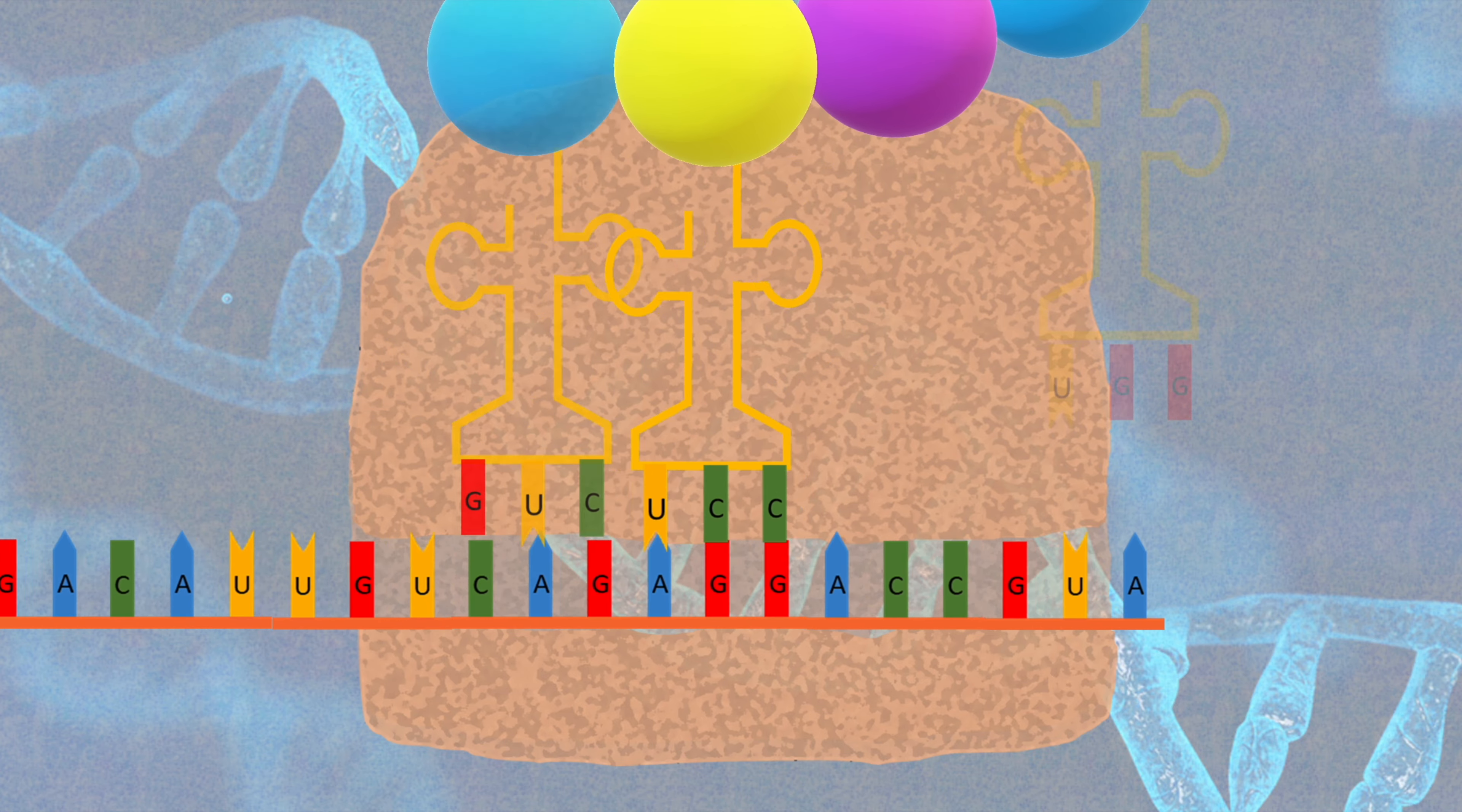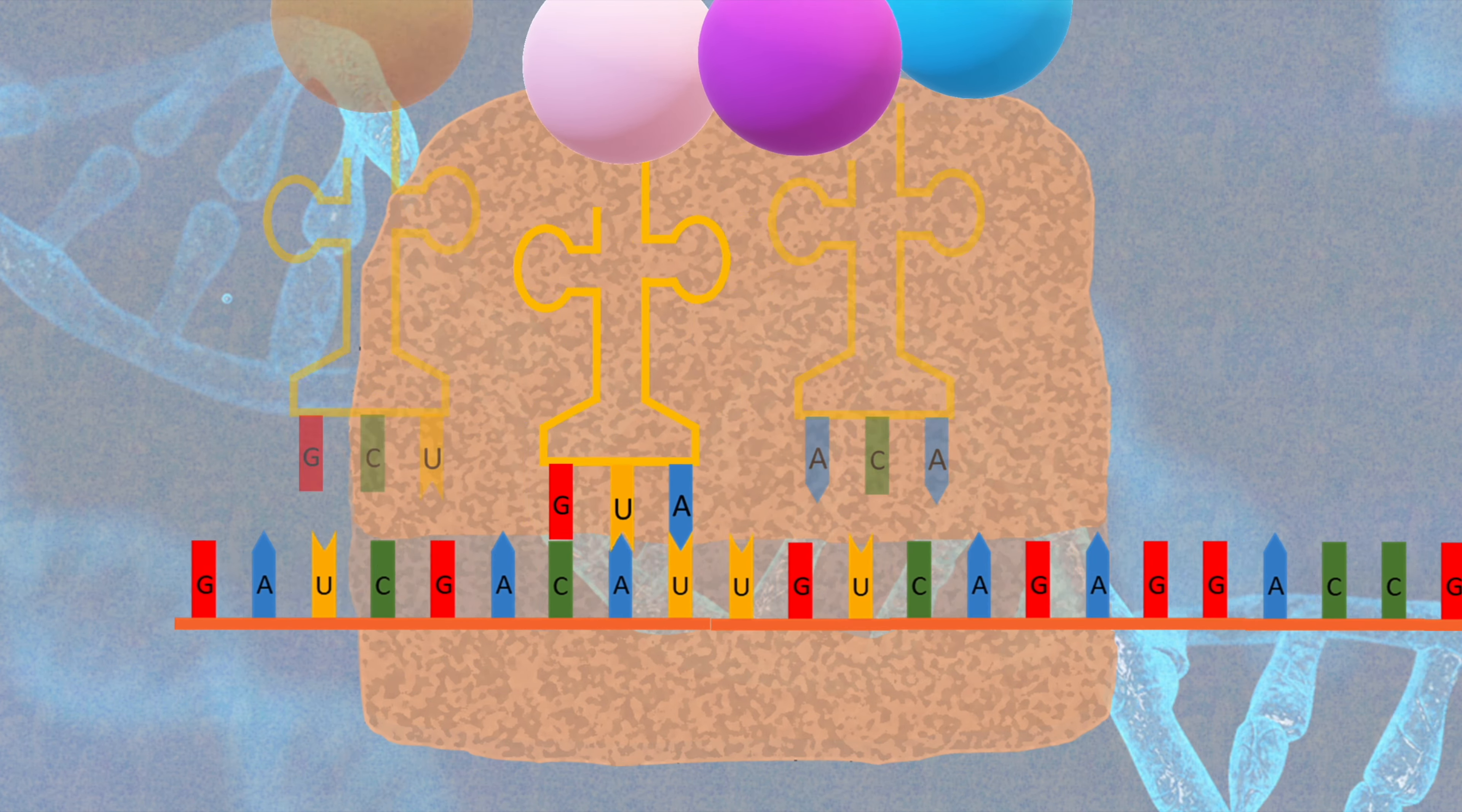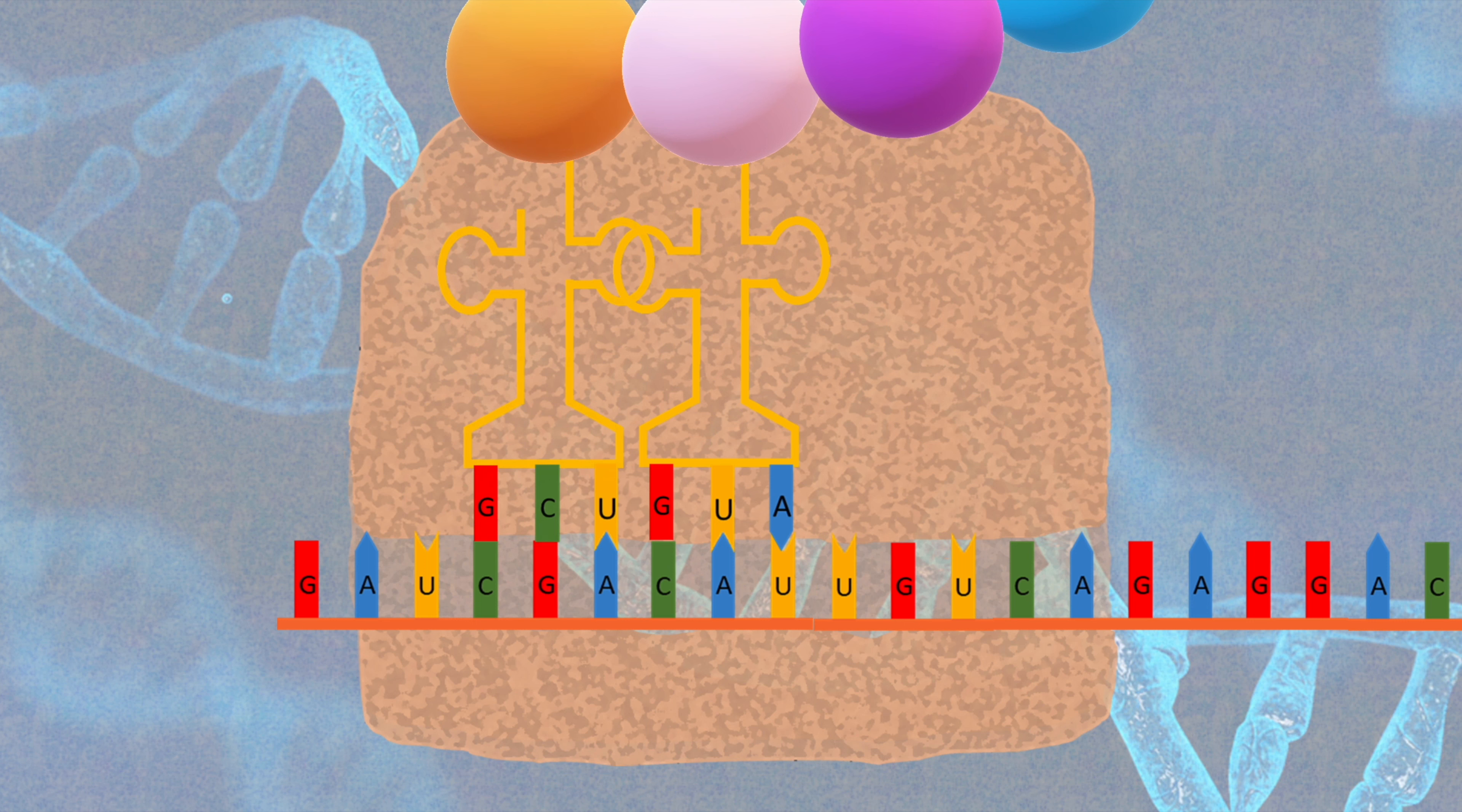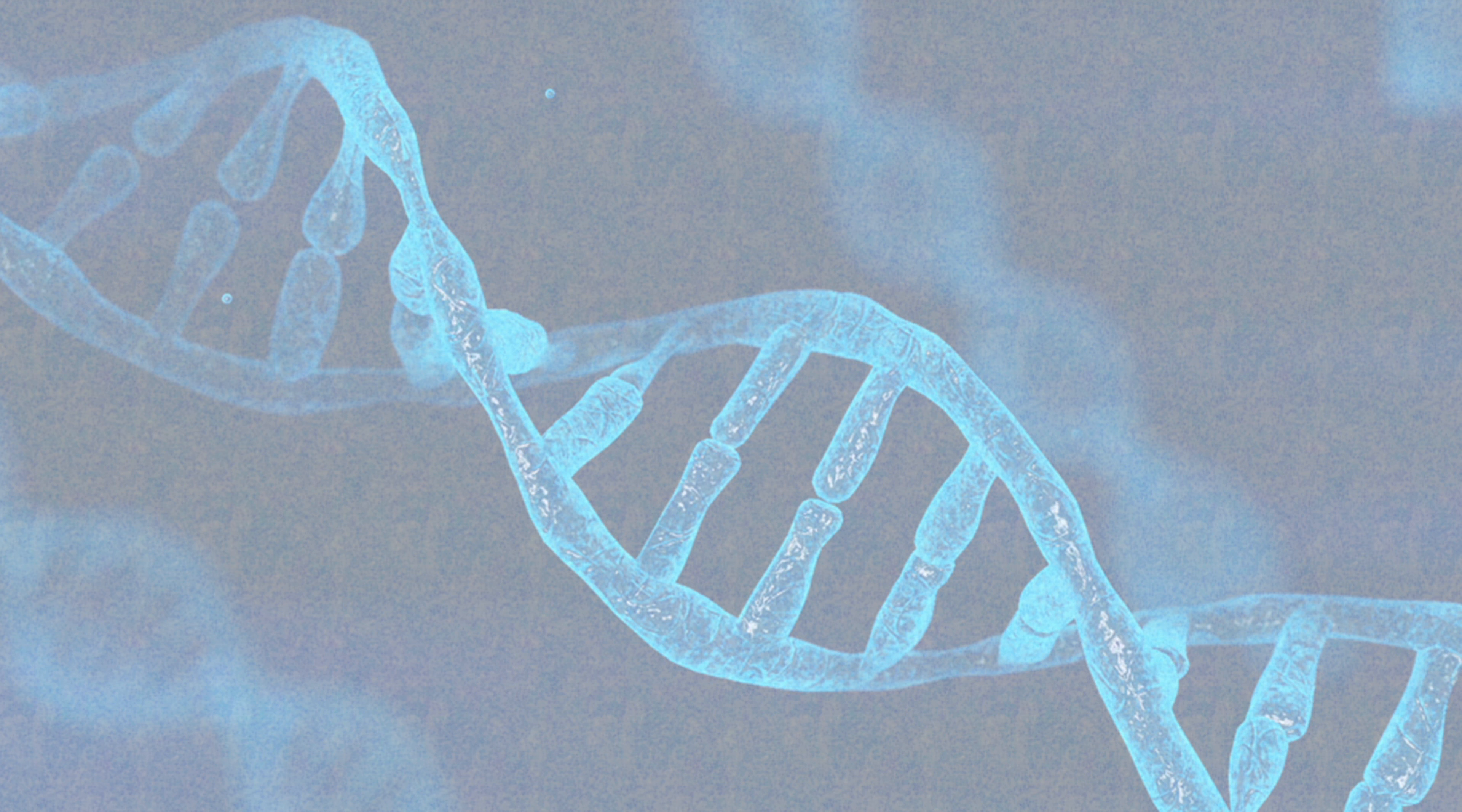This process is repeated for the third, the fourth codon, etc., and a long polypeptide chain is obtained. After a while, there will be a stop codon, indicating that the amino acid chain is finished. The process of translation is completed. The finished polypeptide chain then forms itself and forms a protein.